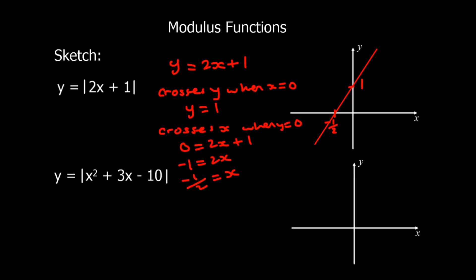For the modulus function, we cannot get a negative output at all. Everything below the x-axis can't be there — if you've got negative 3 it turns into positive 3, if you've got negative 5 it turns into positive 5. So the negative part of the graph reflects back off the x-axis. The positive part stays exactly the same, and the modulus graph always stays positive.